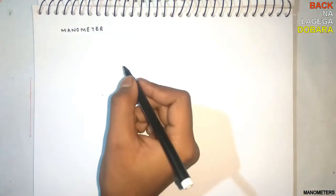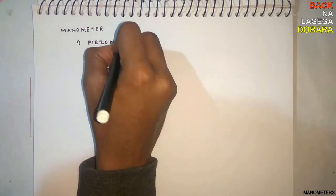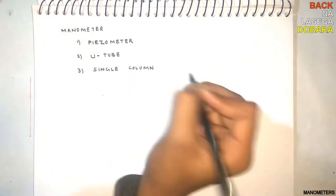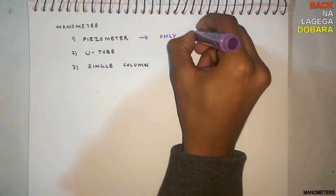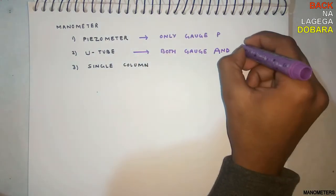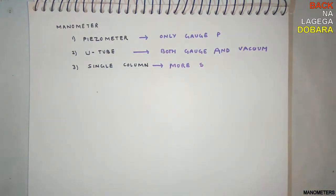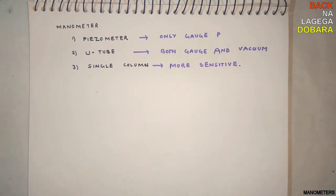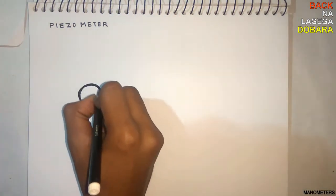Now let's see what is a manometer. Manometer is simply a device or instrument to check pressure. It is of three types mostly: piezometer, U-tube manometer, and single column manometer. The piezometer only measures the gauge pressure, that is it cannot measure the vacuum pressure. The U-tube manometer can measure both gauge pressure and vacuum pressure. The single column manometer is simply the U-tube manometer with more sensitive readings.